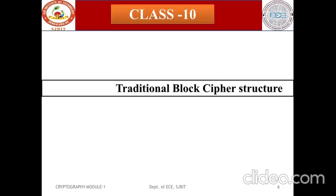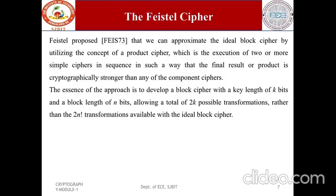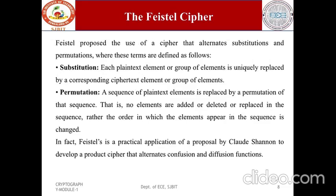Under the traditional block cipher structure, we discuss the Feistel cipher. Feistel proposed that we can approximate the ideal block cipher by utilizing the concept of a product cipher — the execution of two or more simple ciphers in sequence such that the final result is cryptographically stronger. The approach develops a block cipher with a key length of k bits and a block length of n bits, allowing 2^k possible transformations.